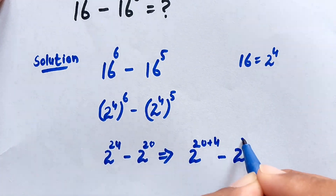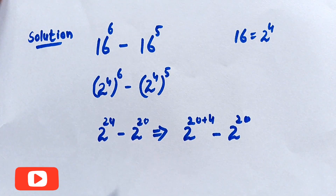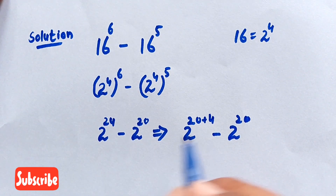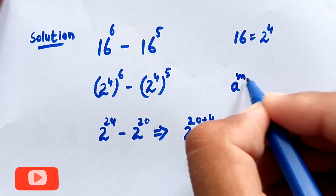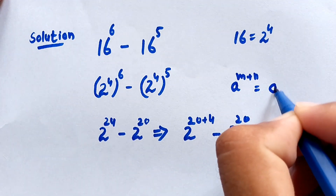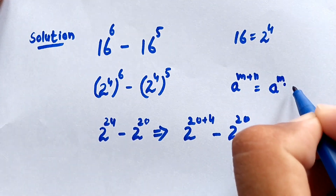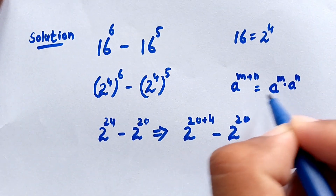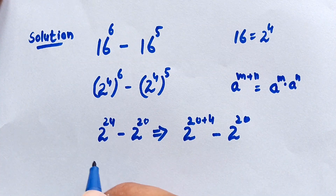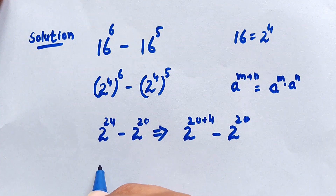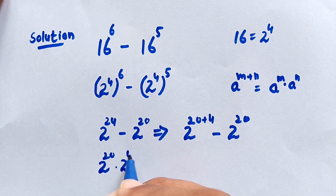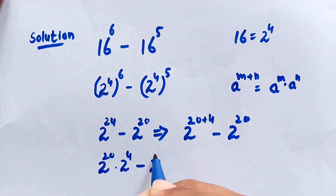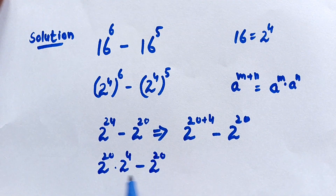Now 2 to the power of 24 is in the form of a to the power of m plus n, which equals a to the power of m times a to the power of n. Applying this condition, 2 to the power of 24 becomes 2 to the power of 20 times 2 to the power of 4, minus 2 to the power of 20.